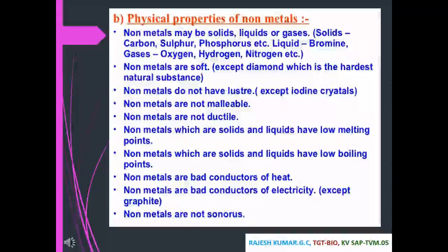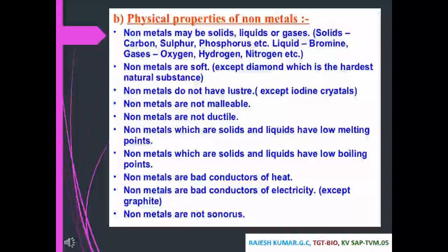Physical properties of non-metals: non-metals may be solids, liquids, or gases. Solids include carbon, sulfur, phosphorus, etc.; liquid includes bromine; gases include oxygen, hydrogen, nitrogen, etc. Non-metals are soft, except diamond which is the hardest natural substance. Non-metals do not have luster, except iodine crystals.